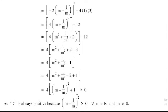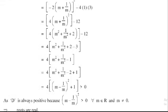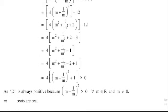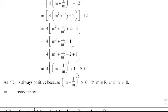As discriminant is always positive because m minus 1 divided m whole squared is greater than 0 for all m belong to real numbers and m does not equal 0, hence the roots are real, which is the required solution.